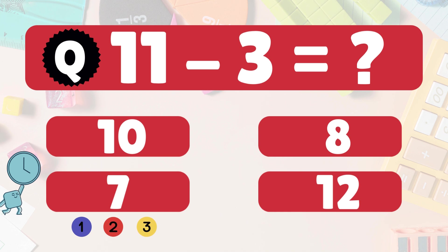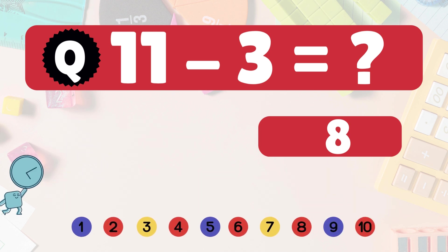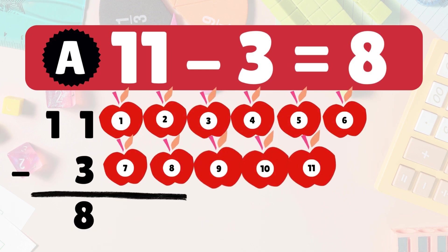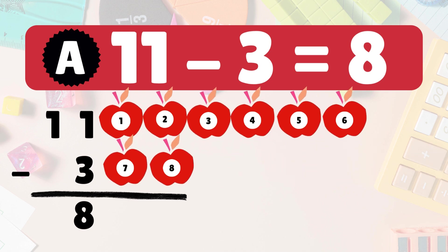Next: 11 minus 3 is 8. Here we have 11 apples. Take 3 away. 8 apples left: 1, 2, 3, 4, 5, 6, 7, 8. So 11 minus 3 is 8. You're on fire! You're amazing!